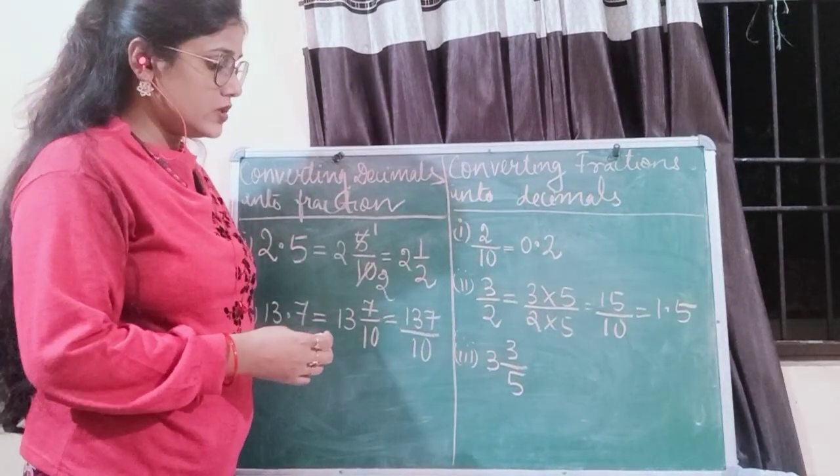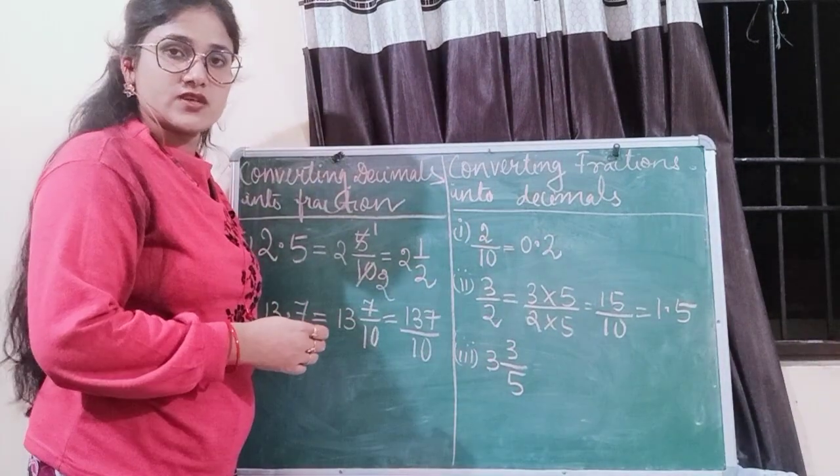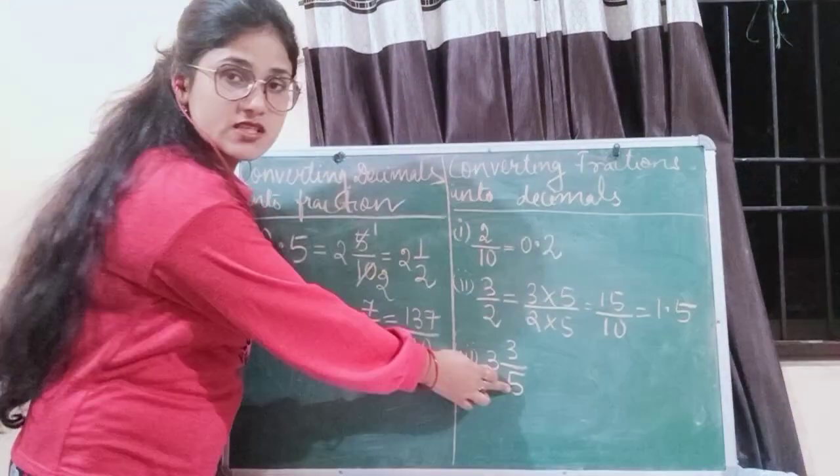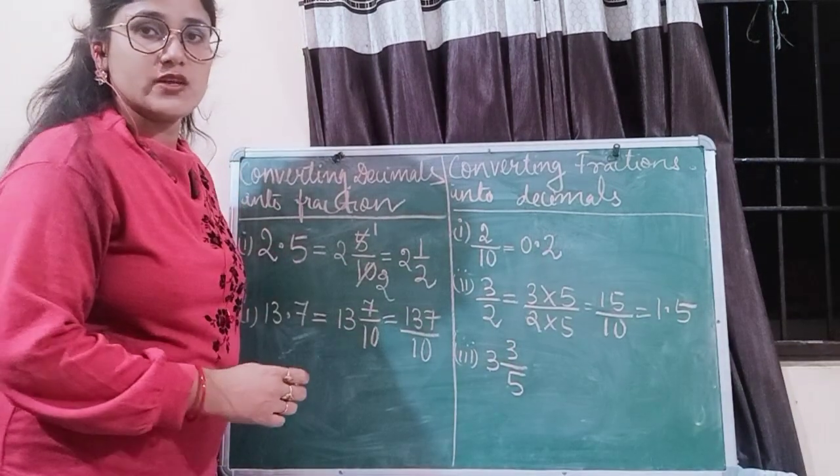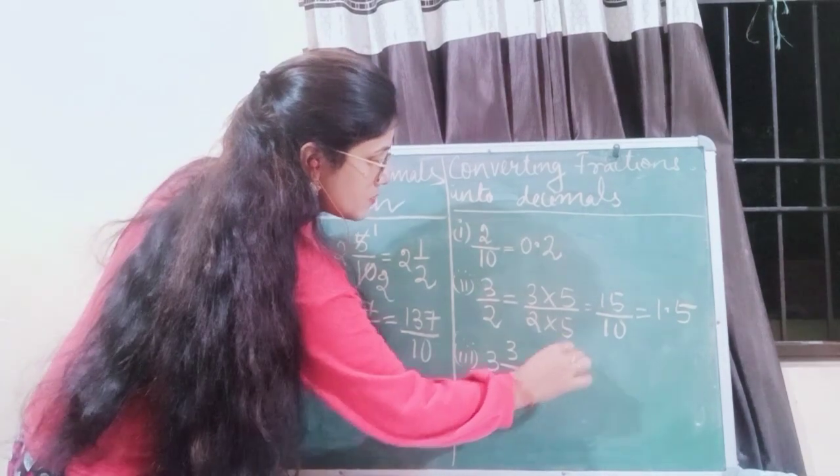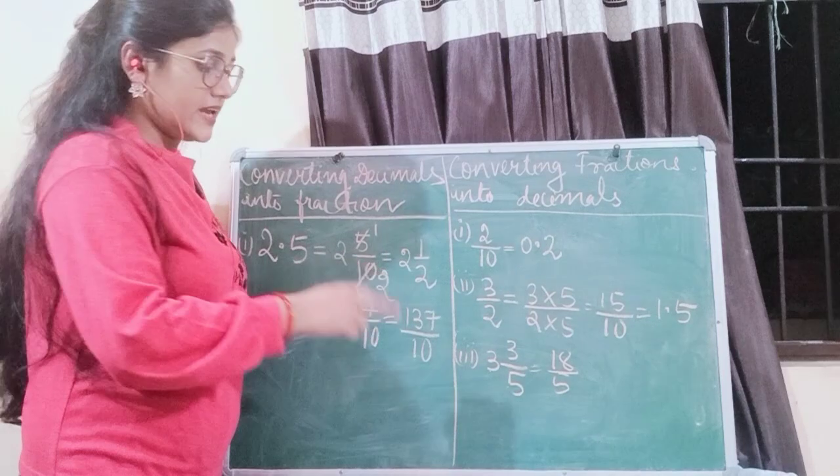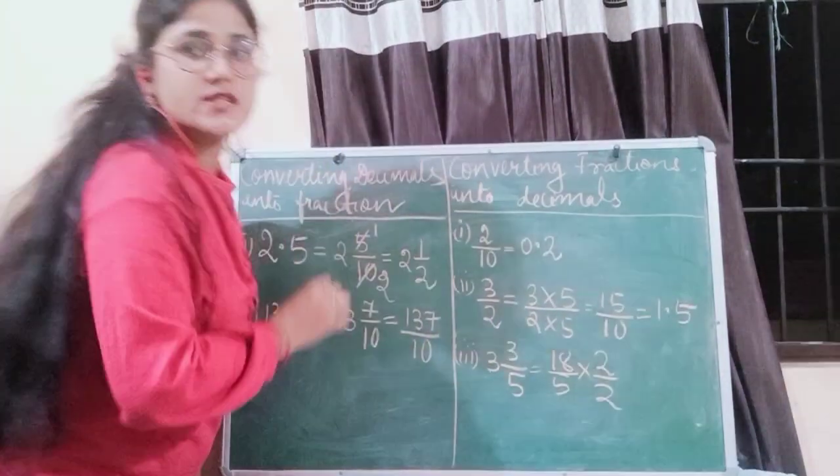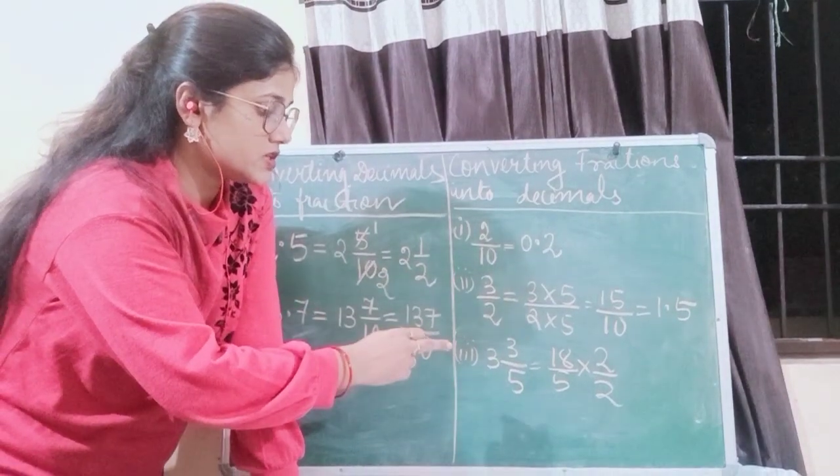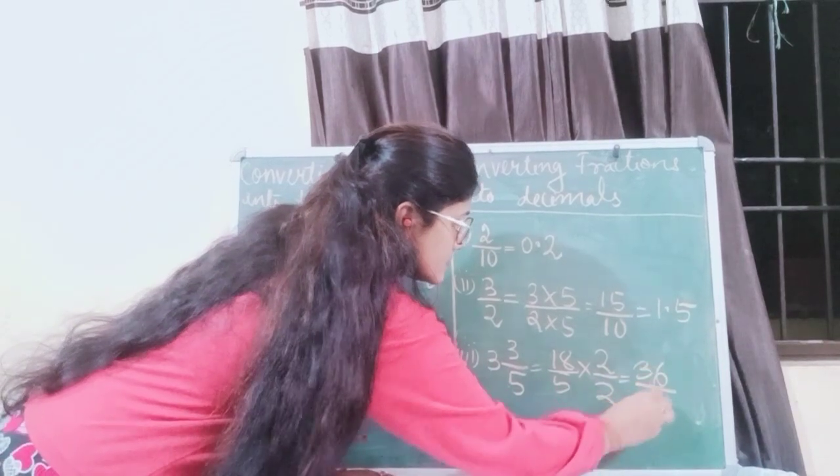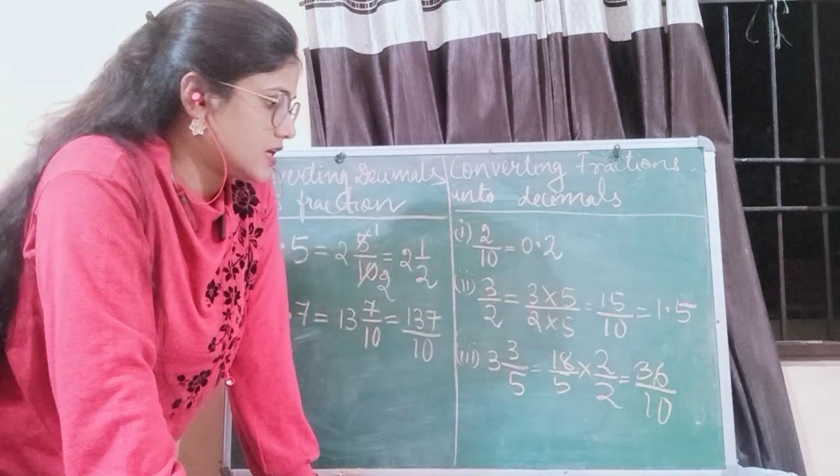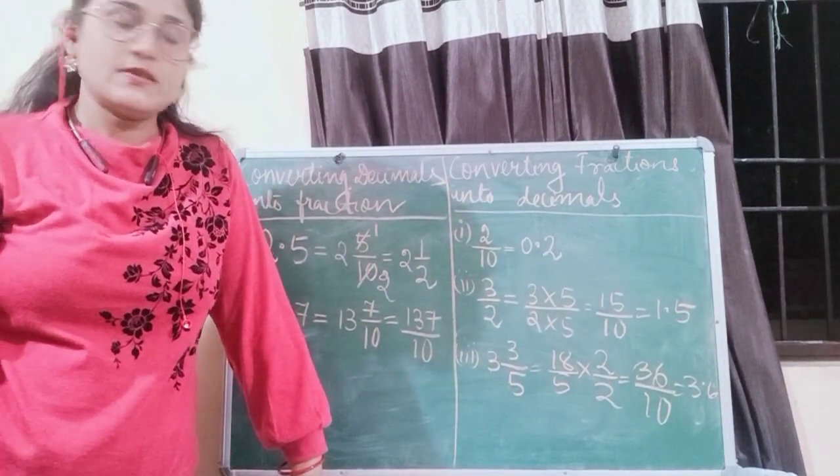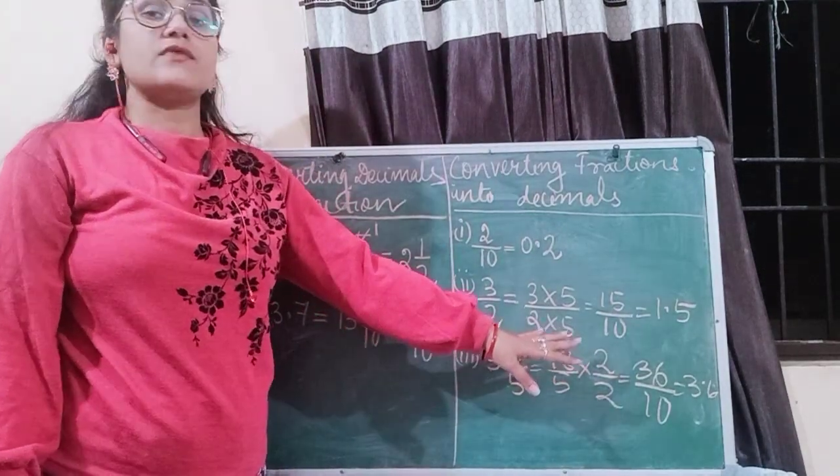The next number is 3 whole 3 by 5, a mixed fraction. To convert into an improper fraction, you will multiply 3 into 5 that is 15, then add 3 to 15, then you get 18 by 5. So to make 5 into 10, you will multiply 2 with the numerator and the denominator both. When you multiply 2 with the numerator and the denominator, you get 36 by 10, which can be written as 3.6. So this is how we represent fractions as decimals.